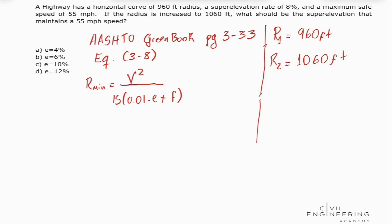Let's calculate our friction factor. If we manipulate this equation a little bit, we're going to see that our friction factor equals V squared divided by 15 times the radius minus 0.01 times our superelevation rate in percent.